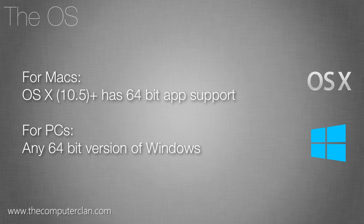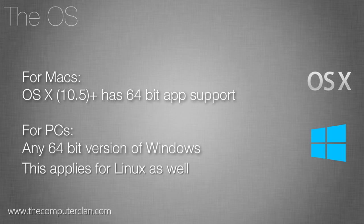For the operating system: if you're on a Mac, OS X 10.5 or higher has 64-bit app support. On Windows, you just need to make sure you have any 64-bit version of Windows installed. Some older programs do have a problem running on 64-bit, but that's usually for older software. Newer programs usually don't have that problem. You can run 64-bit and 32-bit without conflicts thanks to modern technology.